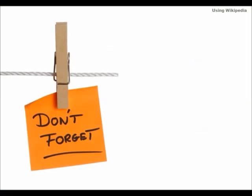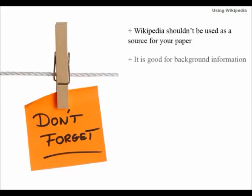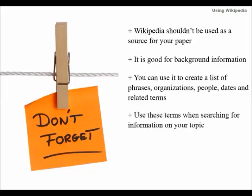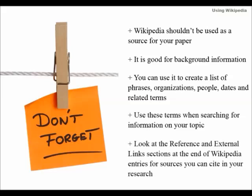Here is a quick list of things to remember. Wikipedia shouldn't be used as a source for your paper. It is good for background information. You can use it to create a list of phrases, organizations, people, dates, and related terms. Use these terms when searching for information on your topic. Look at the reference and external links sections at the end of the Wikipedia entries for sources you can cite in your research.